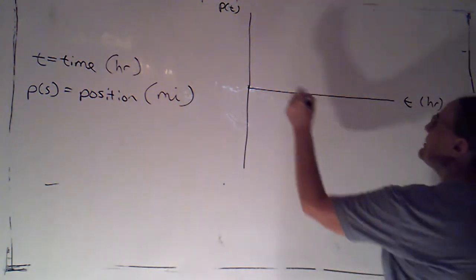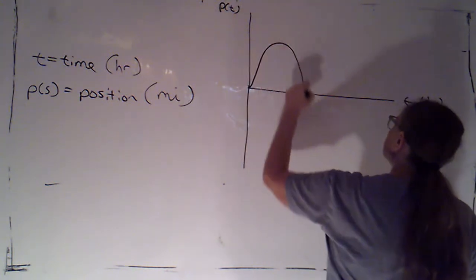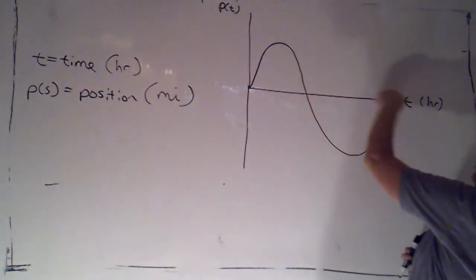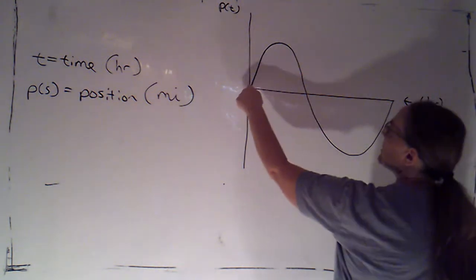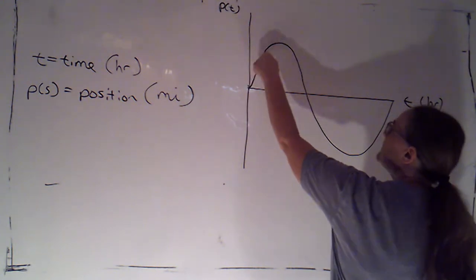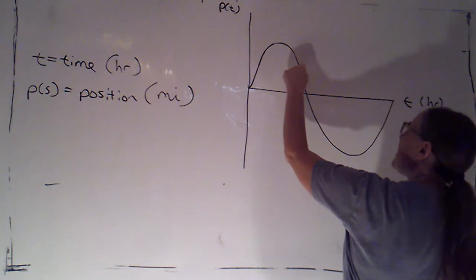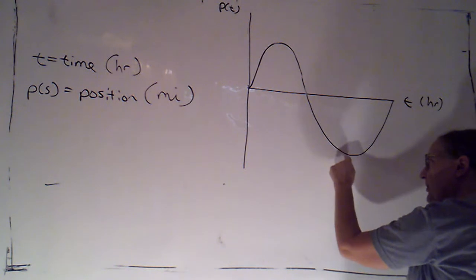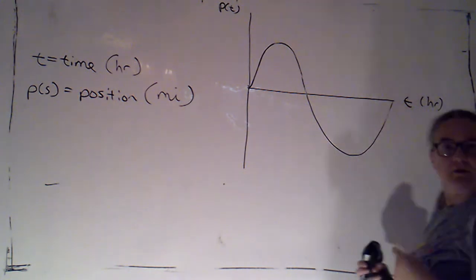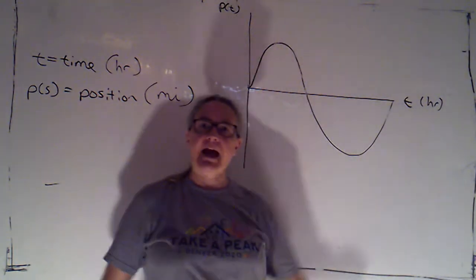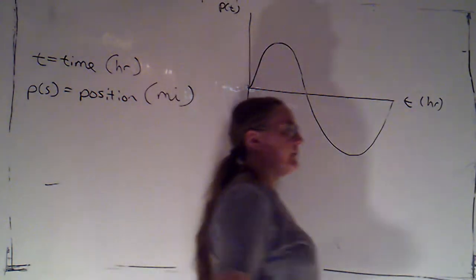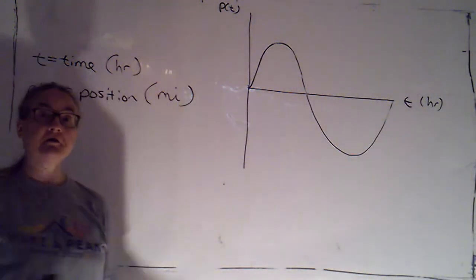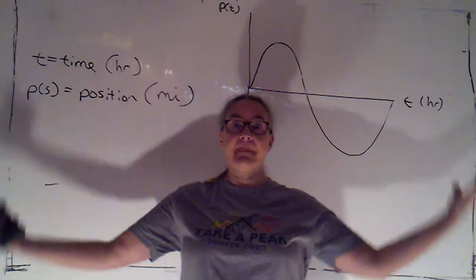Now, if I have a position function, maybe something like this: time is passing as we move forward. This would correspond to — I started at home, moved in the positive direction, then changed direction and turned around, came back home, then moved south of home for a while, turned around, and returned to home. A very exciting trip. If I were to enact that: I'm at home, I went this way for a while, turned around, passed home, went south of home, turned around, came back. That was my exciting journey.